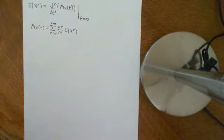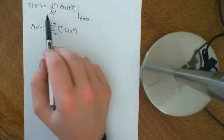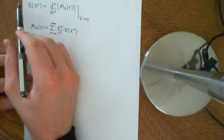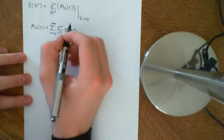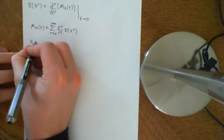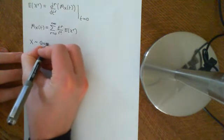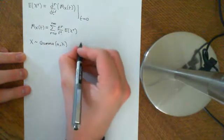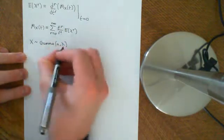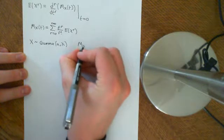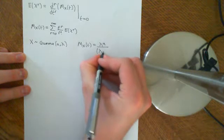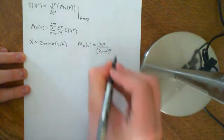Welcome back. Now what we're going to do is apply the stuff we discussed in the previous video about how to extract moments from the moment generating function. We're going to apply that for a random variable X distributed Gamma(a, λ). Two videos ago, we calculated the moment generating function for such a random variable, and we found that it was going to equal λ to the power of a divided by (λ minus t) to the power of a.